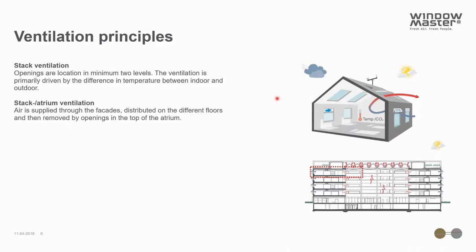The last strategy is of course stack ventilation, which can be perceived in different ways. It will always use thermal buoyancy. In a single zone you will typically have the windows located at different levels and thereby use thermal buoyancy to drive the air and secure a good airflow. But you can also have a building where multiple zones on different levels are sharing the same atrium used for the exhaust of the air. For this type of building it can be more challenging to know which part of the building to use in your air change calculations. We recommend taking a section of the atrium and using the opening area for this part in your calculations, combined with the zone you're investigating.